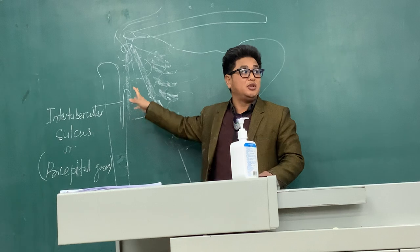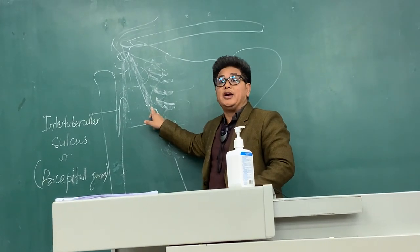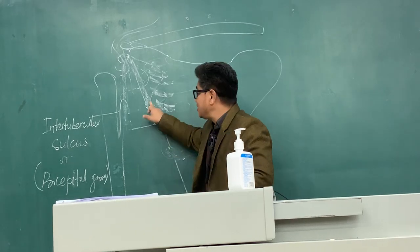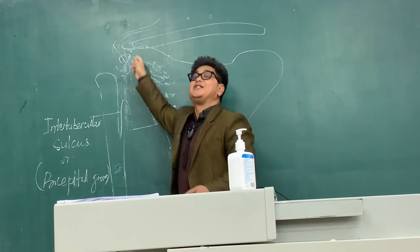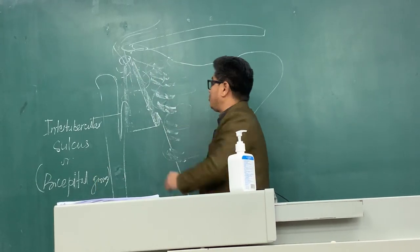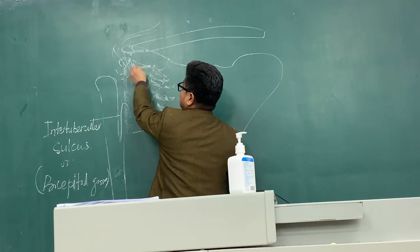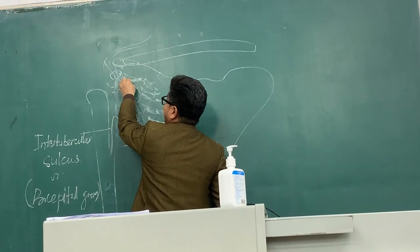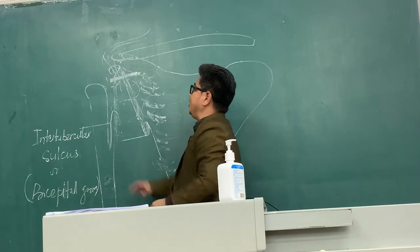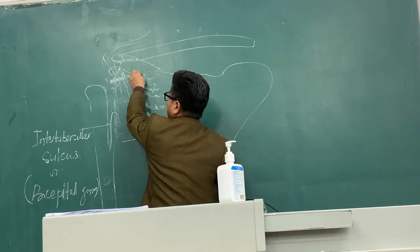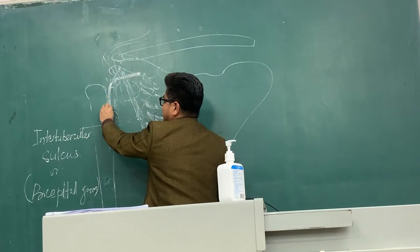This is very important in MCQs. From the infraglenoid tubercle, the long head of triceps brachii muscle goes down. But from the supraglenoid tubercle, the long head of biceps brachii muscle goes down. That long head of biceps brachii muscle is crossing the glenohumeral joint and it passes through this sulcus.